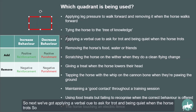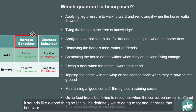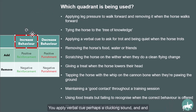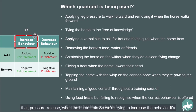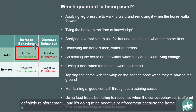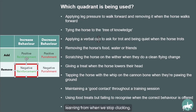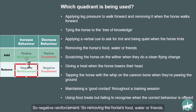Next: applying a verbal cue to ask for trot and being quiet when the horse trots. This sounds like a good behavior we want to increase. You apply a verbal cue — perhaps a clucking sound — and the horse trots. You then stop making that sound when the horse trots, so you're taking the sound away. The verbal cue is your pressure, and stopping it is pressure release when the horse trots. We're trying to increase the behavior, so it's reinforcement, specifically negative reinforcement.